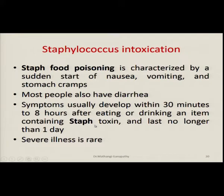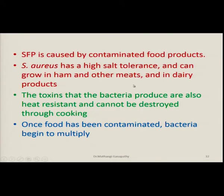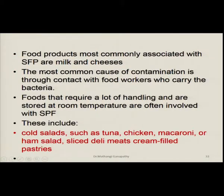Severe illness is rare. Staphylococcus aureus is capable of making 7 different toxins and is often the cause of food poisoning. It is most commonly transferred to food products like milk and cheese through contact with food workers carrying S. aureus. Staph has a high salt tolerance and can grow in ham and other meats and dairy products. The toxins produced by staph are heat resistant and cannot be destroyed by cooking. Foods commonly associated with Staphylococcus food poisoning are milk and cheeses, and those which require a lot of handling and are stored at room temperature.